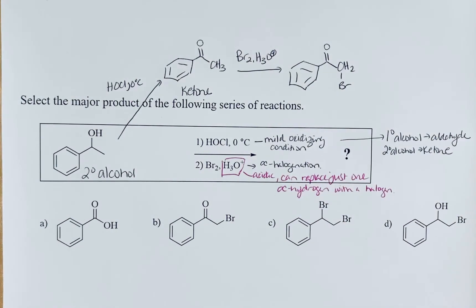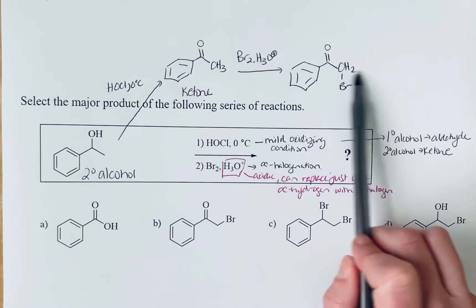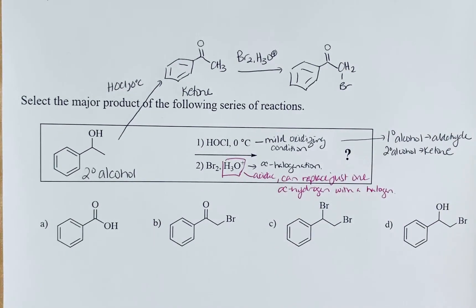Why we might want to do this is once you introduce an alkyl halide now you've got another electrophilic carbon. This opens up the possibility of substitution reactions or if we had a longer alkyl chain here so we could form a double bond we could think about elimination as well.